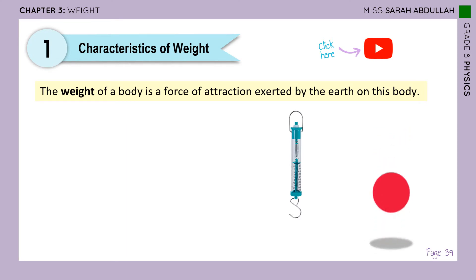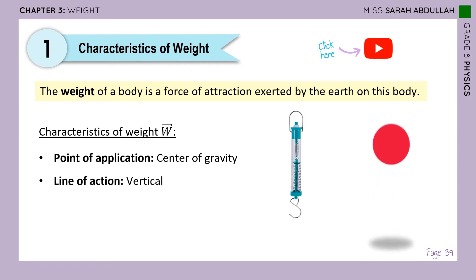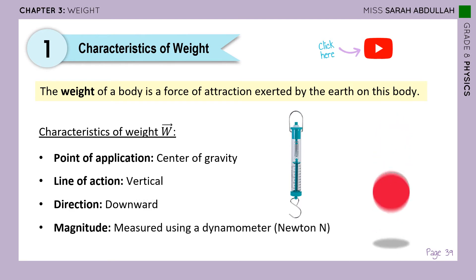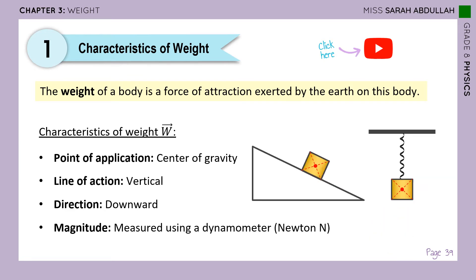Starting off with the characteristics of weight: the weight of a body is the force of attraction exerted by the earth on this body. Its characteristics are — point of application: center of gravity; line of action: vertical direction downward. Its magnitude can be measured using a dynamometer or a spring balance, and its unit is the Newton. To represent it, simply take the center of the object and draw a vertical downward force.